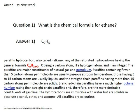Paraffins are major constituents of natural gas and petroleum. Paraffins containing fewer than five carbon atoms per molecule are usually gaseous at room temperature; those with five to fifteen are usually liquids; and straight-chain paraffins with more than fifteen carbon atoms are solids. Branched-chain paraffins have much higher octane number ratings than straight-chain paraffins and are more desirable constituents of gasoline. All paraffins are colorless and immiscible with water but soluble in alcohol, absolute alcohol, and ether.